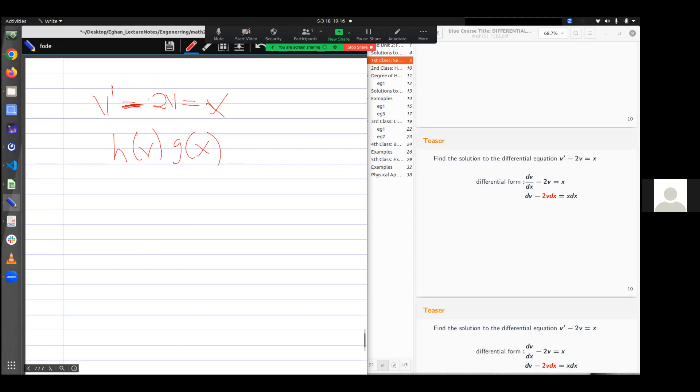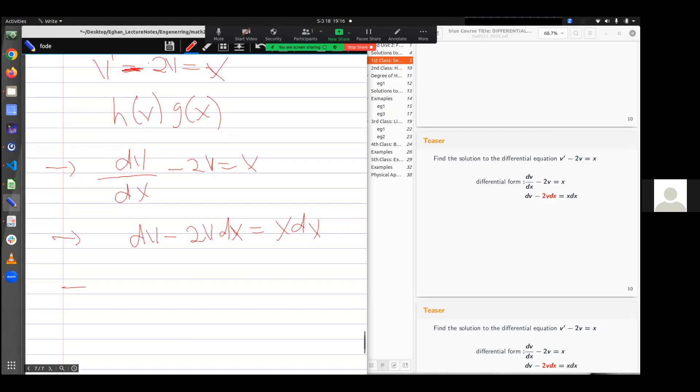Let's write in the standard form. In the standard form, I have dv/dx - 2v equal to x. In the differential form, I have dv - 2v dx is equal to x dx. I still want to separate this by all means. But you realize that it will never be separable.